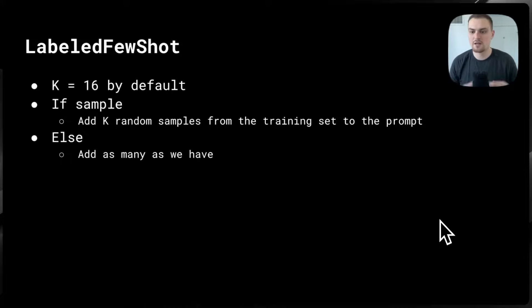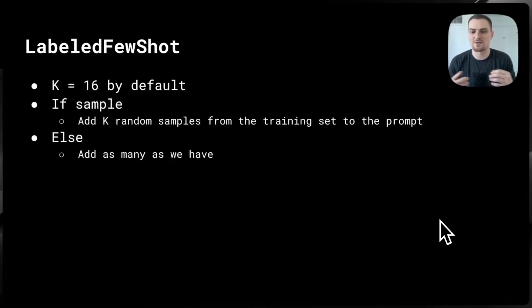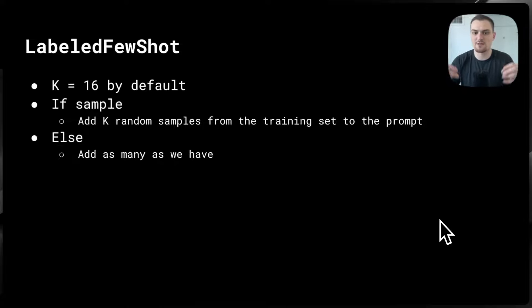Starting off with Labeled FewShot, you start with default values for how many examples you're going to be bootstrapping into the input-outputs — K equals 16 by default. That's a super important one to tune, especially as we'll see with the demo when optimizing say context summaries. If you have too many examples, you have a massive input window. What Labeled FewShot is doing is bootstrapping — adding input-output examples you have given the system directly into the prompt.